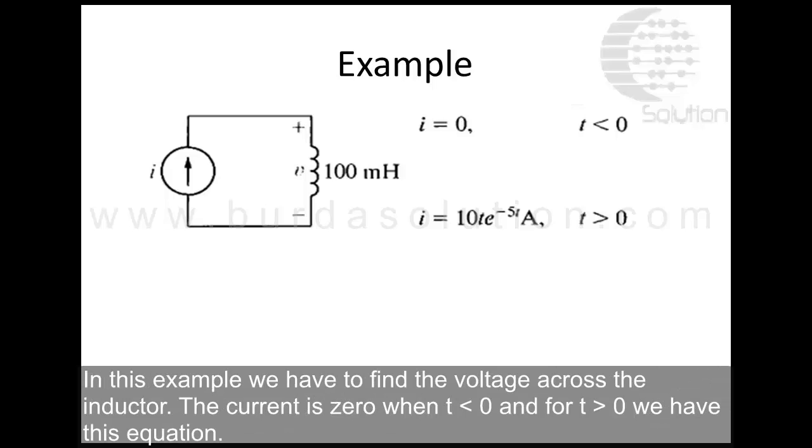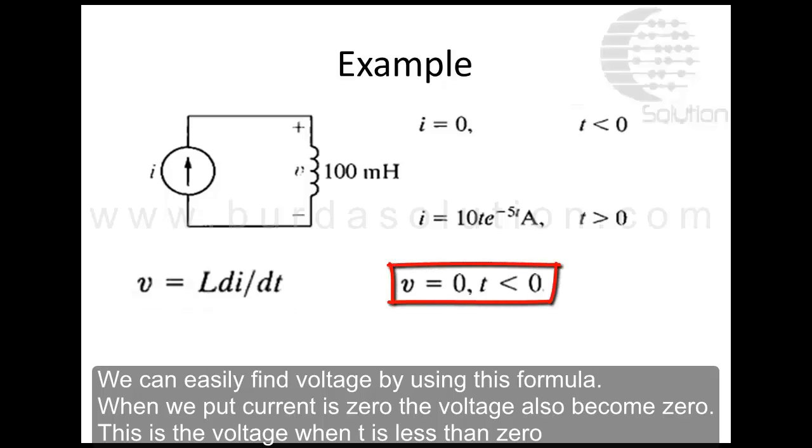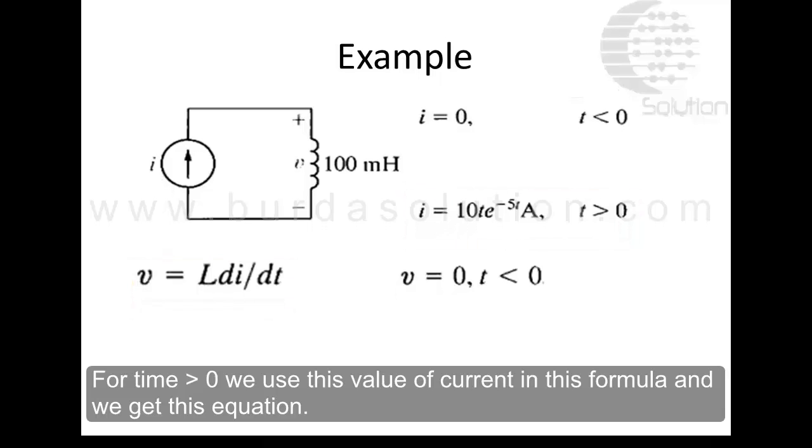In this example, we have to find the voltage across the inductor. The current is zero when t is less than zero, and for t greater than zero, we have this equation. We can easily find voltage by using this formula. When we put current is zero, the voltage also becomes zero. This is the voltage when time t is less than zero. For time greater than zero, we use this value of current in this formula and we get this equation.